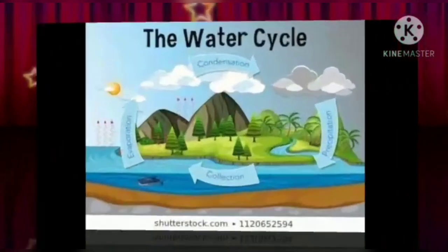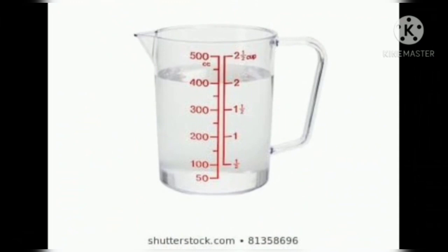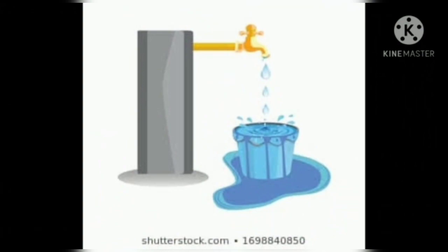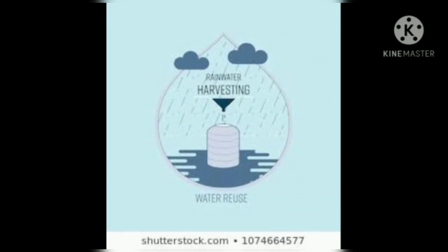After studying this lesson, we can understand about the water cycle and measure the water used in daily life using informal measurements. We can classify sources of water suitable for drinking, make a list of problems caused due to shortage and wastage of water, and understand the importance of recycling of water and rainwater harvesting.